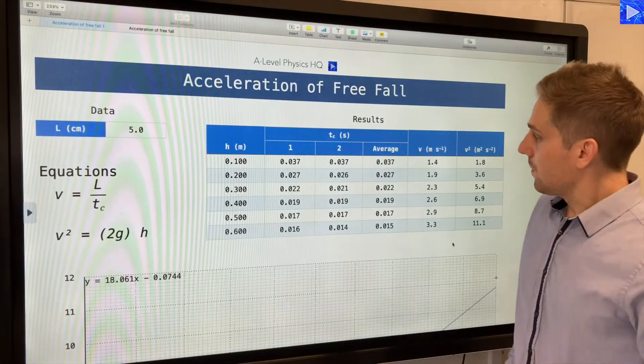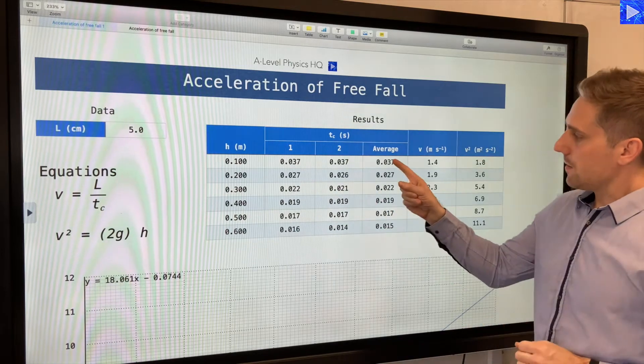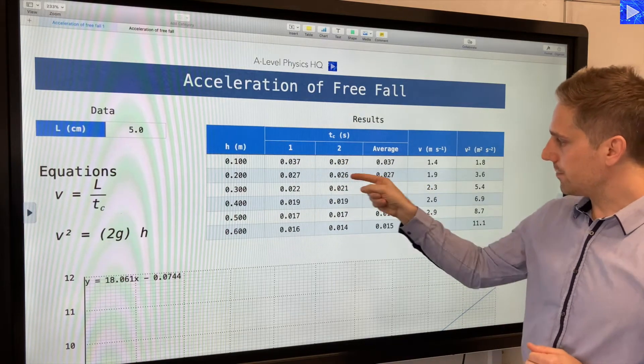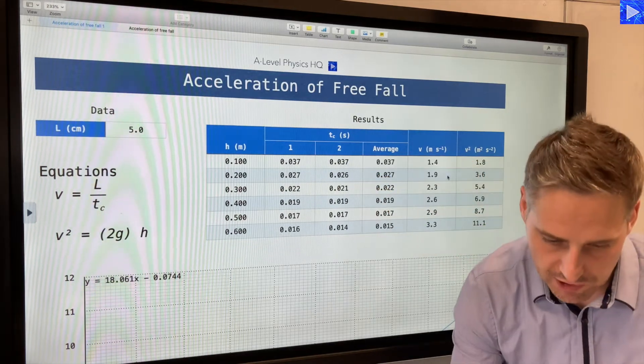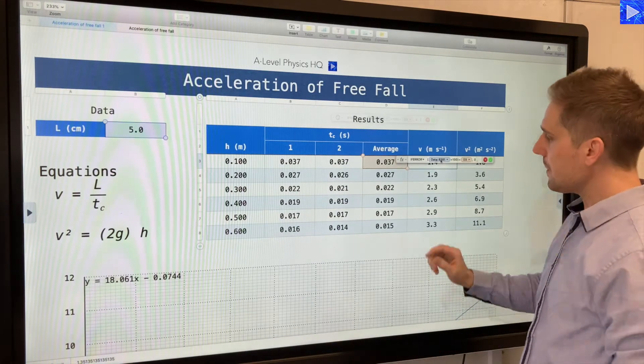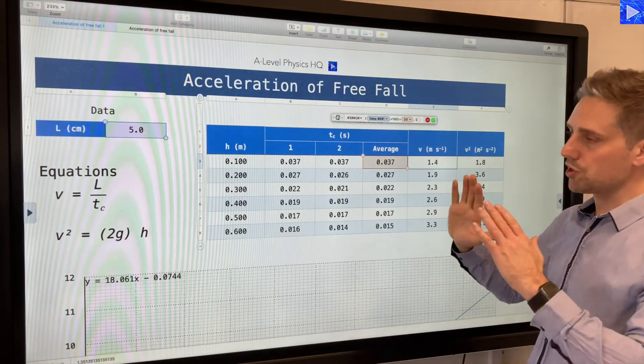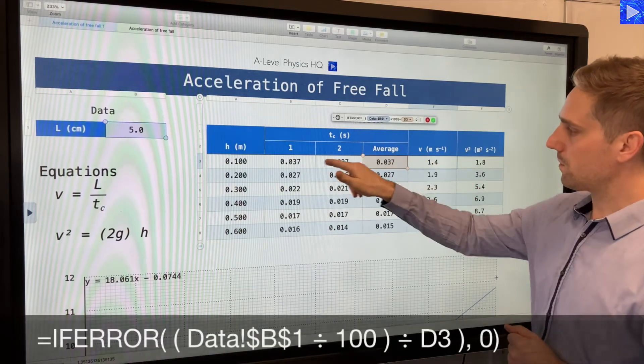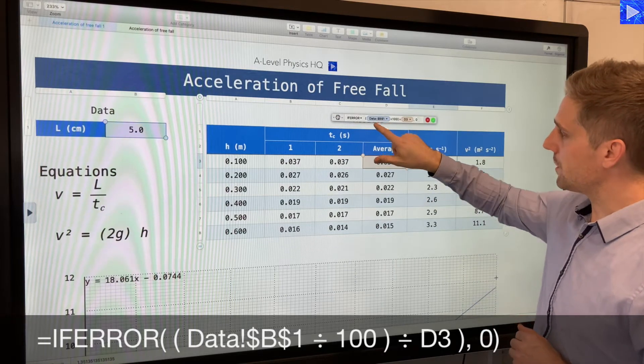There's our Tc values with the repeats there. The averages are calculated from here. Let's have a look at the calculation. In this calculation, I've surrounded it in an if error because when there's no data here, this shows up an error, just to keep things tidy as I've explained in other videos.